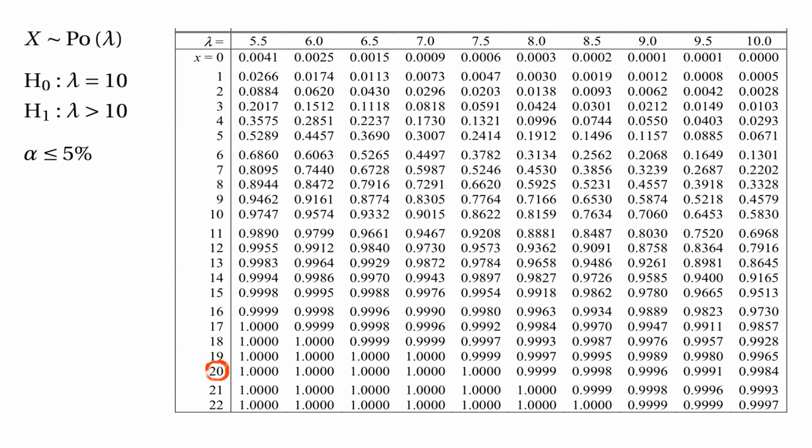If x turned out to be 20, would we end up rejecting the null hypothesis? We'd need the probability that x is greater than or equal to 20, which equals 1 minus the probability that x is less than or equal to 19. The table tells us that the probability that x is less than or equal to 19 is 0.9965. So 1 minus 0.9965 gives 0.0035, which is smaller than 5%, so we would reject the null hypothesis if x equals 20.